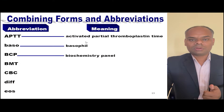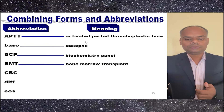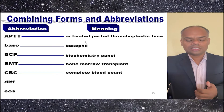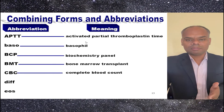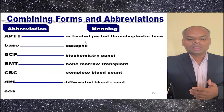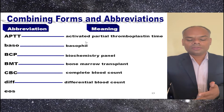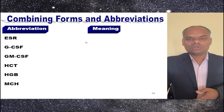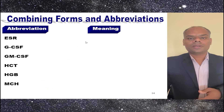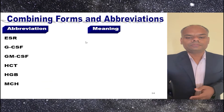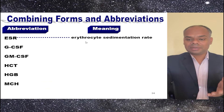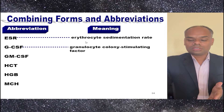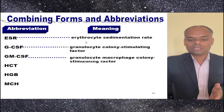BCP is biochemistry panel. BMT is bone marrow transplant. CBC is complete blood count. DIF is differential blood count. EOS is eosinophil. ESR is erythrocyte sedimentation rate. GCSF is granulocyte colony stimulating factor.